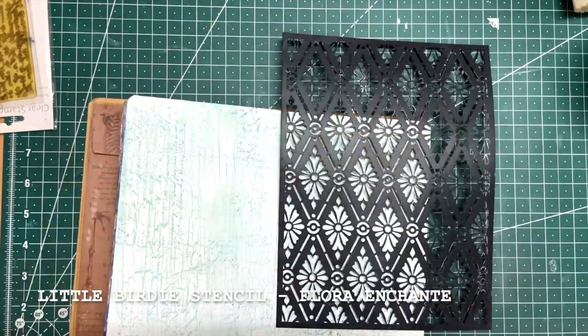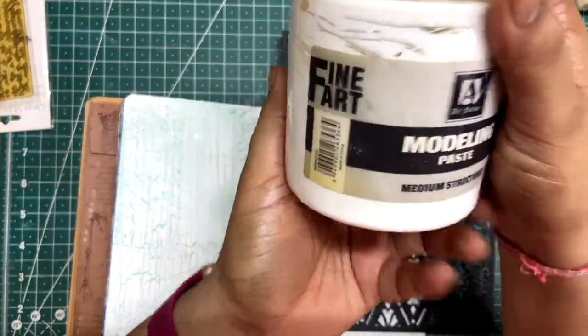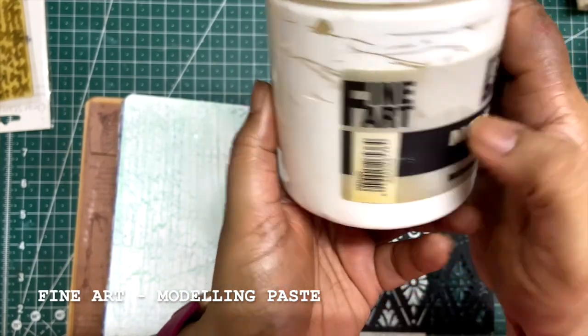Now I want to add some extra texture on the page and for that I am using the modeling paste along with the stencil.